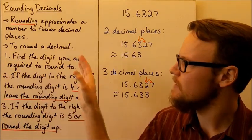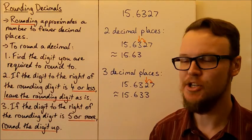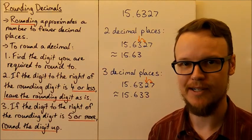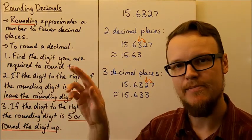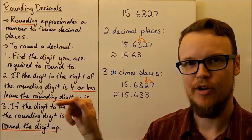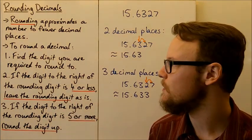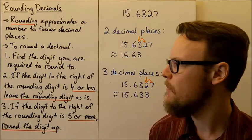To round a decimal, firstly find the digit you're required to round to. It's good to make a bit of a mark — put an arrow or something to show that you know which is the digit you need to round to.